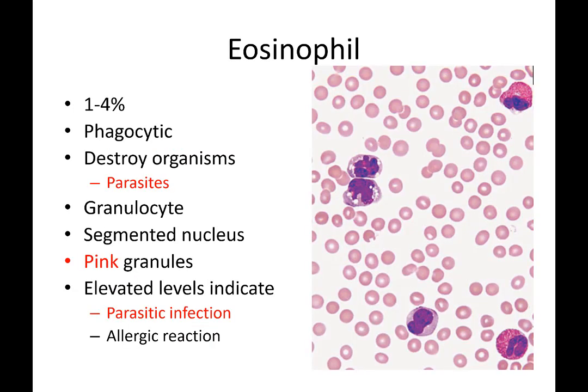Eosinophils are somewhat rare to see, at about 1 to 4%. They are present in greater numbers in the presence of parasites as well as in allergic reactions. They are bright pink — that's the main way you will identify them on a slide. Their numbers are increased under conditions of a parasitic infection as well as allergies.